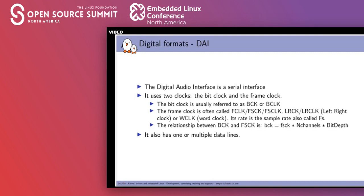There is a relationship between BCLK and FSCK: the bit clock equals the frame clock multiplied by the number of channels multiplied by the bit depth (the sample size). The DAI also has one or multiple data lines, and it's possible to get more than two data lines.